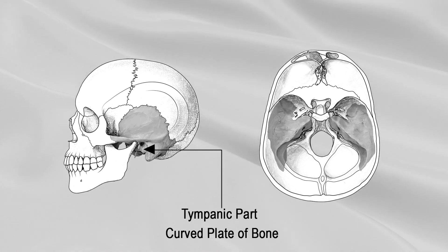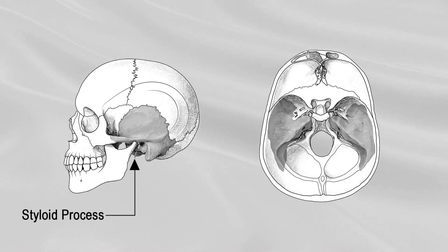The tympanic part is a curved bony plate, lying below the squamous part and in front of the mastoid part. The styloid process projects downward and forward from the undersurface of the temporal bone.